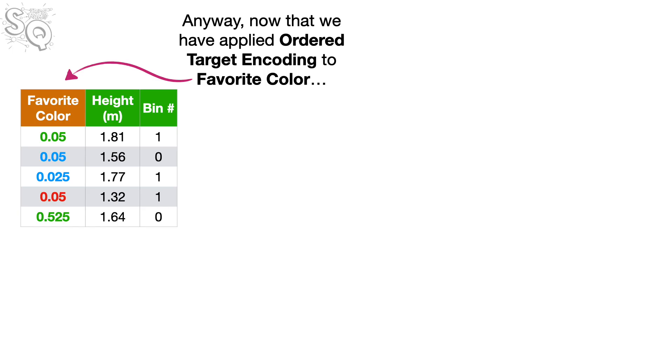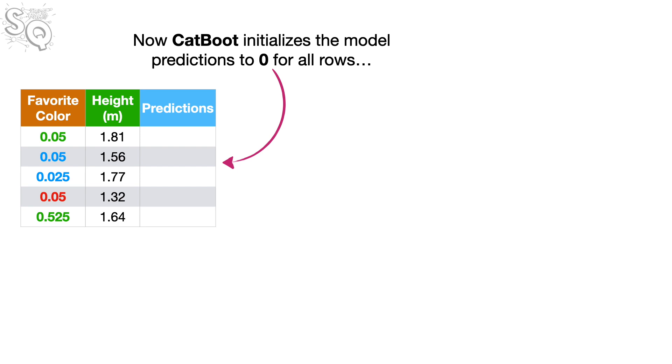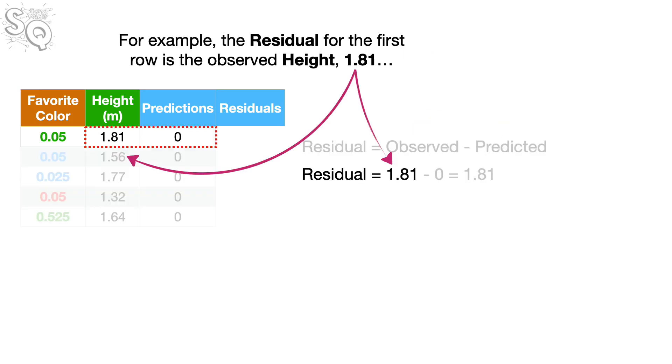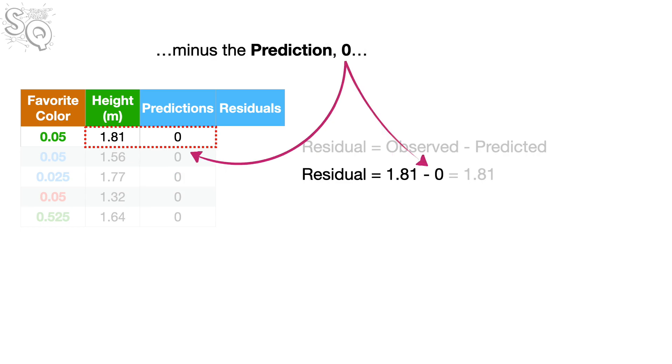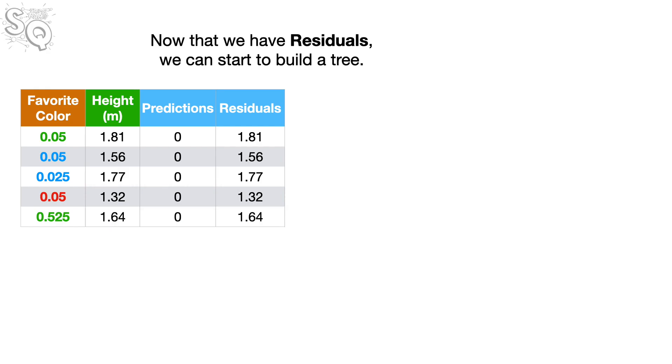Anyway, now that we have applied Ordered Target Encoding to favorite color, we can ignore the bin numbers because we won't need them until we build the next tree. Now CatBoost initializes the model predictions to 0 for all rows, and calculates the initial residuals, the differences between the observed heights and the predicted heights. For example, the residual for the first row is the observed height, 1.81, minus the prediction, 0, which equals 1.81. Likewise, CatBoost calculates all of the other residuals. Bam!